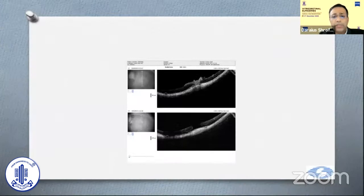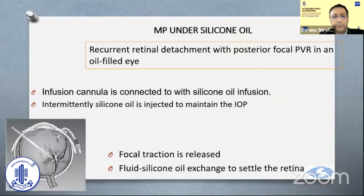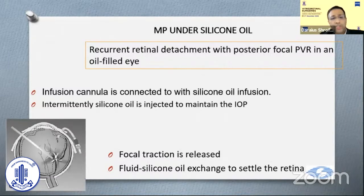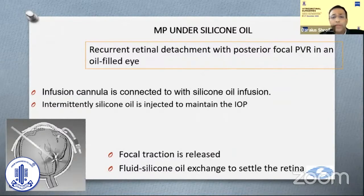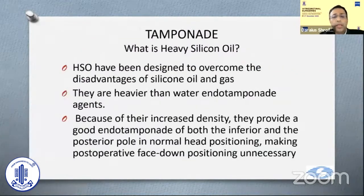This is another pre-op versus post-op picture. Regarding membrane peeling under oil: if you have a recurrent detachment with a focal area of traction, you don't need to remove all the oil. You can just do a localized membrane peeling under oil and then settle the retina quite well with this maneuver.